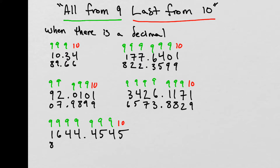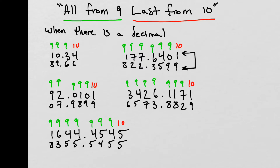Next: 9 minus 3 gives us 6, 9 minus 4 is 5, 9 minus 2 is 7, 9 minus 6 is 3. Bring that decimal down. Then 9 minus 1 is 8, 9 minus 1 is 8, 9 minus 7 is 2, and 10 minus 1 is 9. Next: 9 minus 9 is 0, 9 minus 1 is 8, 9 minus 6 is 3, 9 minus 4 is 5, 9 minus 4 is 5. Bring that decimal down, then 9 minus 4 is 5, 9 minus 5 is 4, and 10 minus 5 is 5. These pairs of numbers are complements — when added together they give a base number.